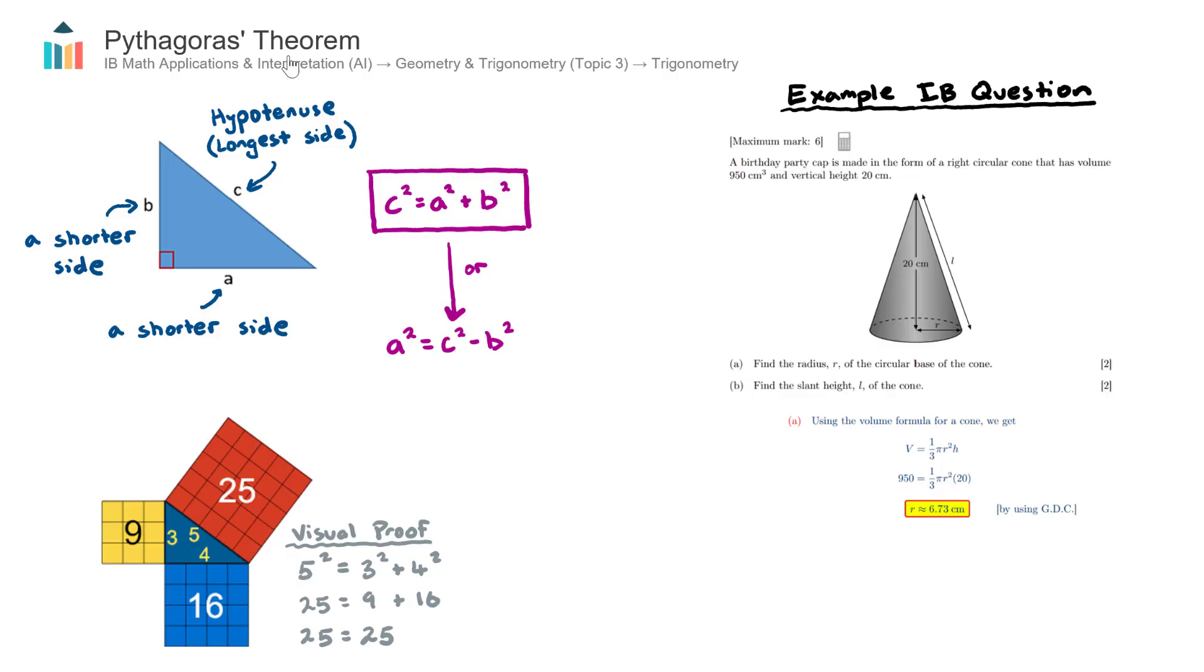In this video we look at Pythagoras' Theorem, which is one of the most popular and well-known theorems in mathematics. It is in the AI course under topic 3, Geometry and Trigonometry, under the subtopic of Trigonometry.